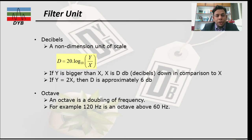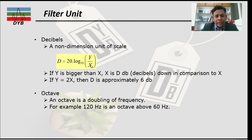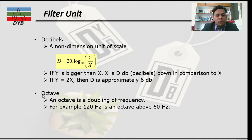We also use specific units for frequency. The decibel is a non-dimensional unit of scale, defined by the expression: dB = 20 × log10(Y/X). If Y is bigger than X, then X is a certain number of decibels down compared to Y. If Y equals double the X value, then the decibel difference is approximately 6 dB. Another term used is octave — frequencies are often described in decibels per octave. An octave is the doubling of frequency; for example, an octave above 60 Hz is 120 Hz.